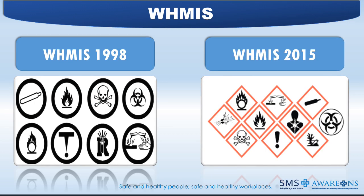The next few slides will cover WHMIS legislation. Originally, WHMIS, Canada's right-to-know hazard communication standard, came into effect on October 31, 1988. It was developed by the collaborative efforts of government, industry, and labour, and is supported by both federal and provincial legislation. In 2015, WHMIS was updated to match the international globally harmonized system. The updated system in Canada is known as WHMIS 2015.